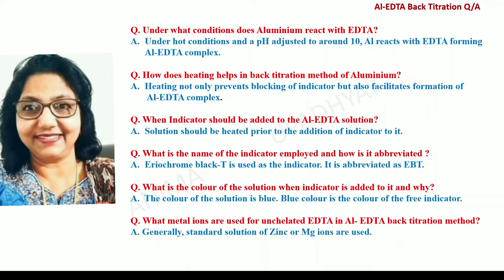Under what conditions does Aluminium react with EDTA? Under hot conditions and a pH adjusted to around 10, Aluminium reacts with EDTA forming an Aluminium-EDTA complex. How does heating help in the back titration method of Aluminium? Heating not only prevents blocking of the indicator, but also facilitates formation of the Aluminium-EDTA complex. The indicator should be added to the solution which is already heated, brought to a boil, and cooled.